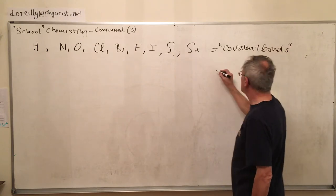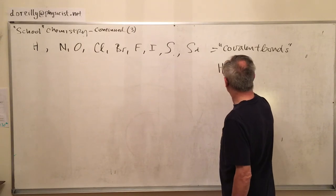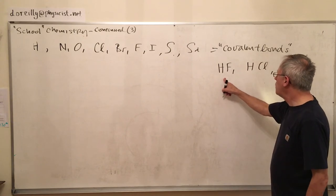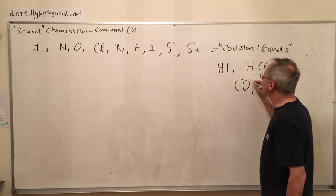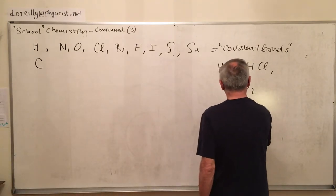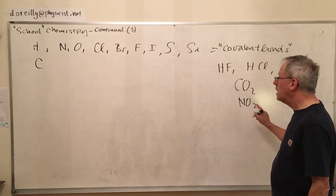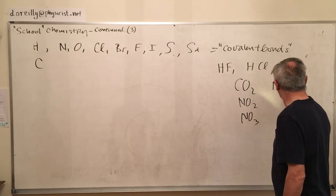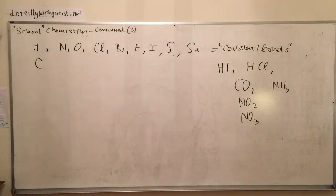They make all the covalent bonds, covalent compounds, such as hydrogen fluoride, hydrogen chloride—these are acids. Hydrofluoric acid. Carbon dioxide, CO₂. Nitric oxide, nitrous oxide, NO₂, NO₃. NH₃ is ammonia. So they're the covalent bonds.